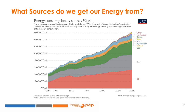Globally, we get the largest amount of our energy from oil, mainly used to produce petroleum products, followed by coal, gas, then hydroelectric power, mainly used to produce electricity. The global energy mix is still dominated by fossil fuels; despite strong recent growth in renewable sources, fossil fuels still account for more than 80% of energy consumption.